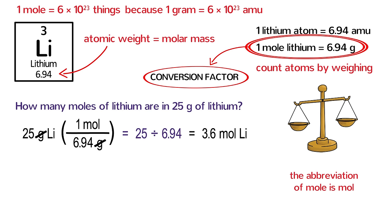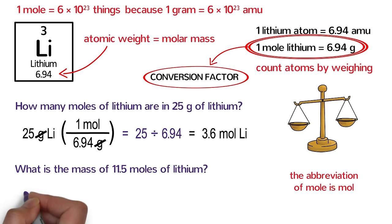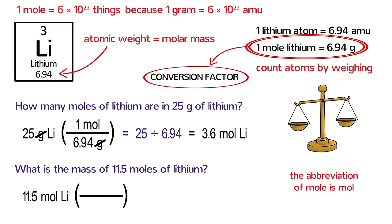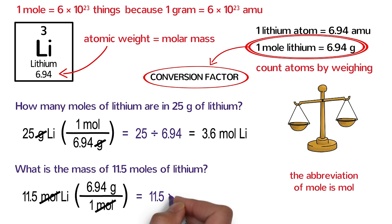Okay, time for another sample problem. What is the mass of 11.5 moles of lithium? We realize that mass is measured in grams, so we need to convert from moles to grams. The first thing you should do is write down the quantity you know: 11.5 moles of lithium. Next, multiply this by a conversion factor fraction. The molar mass of lithium is still the conversion factor. Because we are starting with moles, one mole goes on the bottom and 6.94 grams goes on the top. Moles on the top and bottom cancel each other out. In your calculator, type 11.5 times 6.94. The answer works out to be 79.8 grams of lithium.